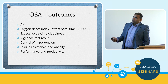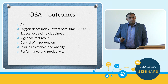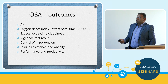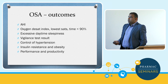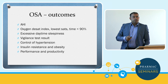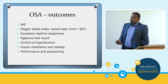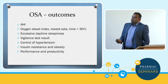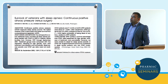Outcomes — traditionally we looked at AHI, but now we're looking at overall oxygen desaturation index, lowest oxygen saturation levels, time spent below 90% saturation, daytime sleepiness, vigilance test, control of hypertension, insulin resistance and obesity, and performance and productivity.